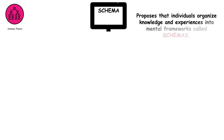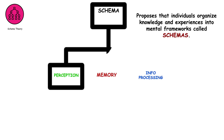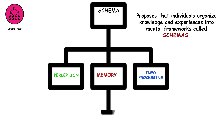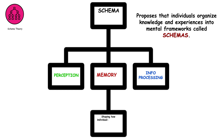Schema theory proposes that individuals organize knowledge and experiences into mental frameworks called schemas. These schemas influence perception, memory, and information processing, shaping how individuals interpret and respond to the world around them.